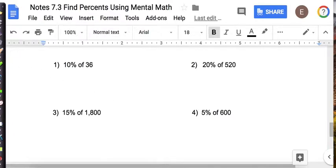Okay, if you turned it off, welcome back. And let's see how you did. 10% of 36. So move it one place to the left. So it's 3 and 6 tenths.